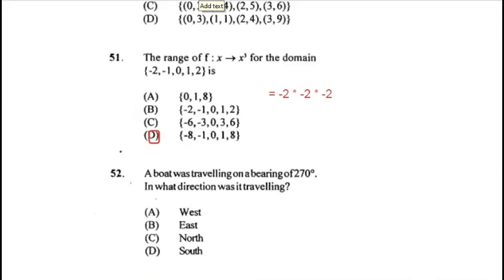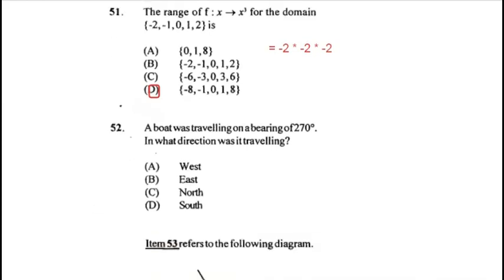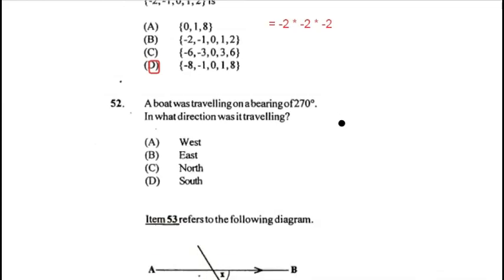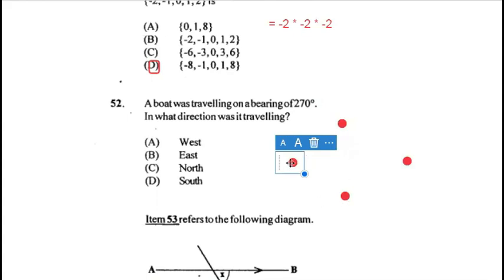Question 52: a boat was travelling on a bearing of 270 degrees — in what direction was it travelling? North is 0°, east is 90°, south is 180°, and adding another 90° brings us to 270°, which is west. So the boat was moving in a westward direction. More detail is in the 2007 paper linked below.